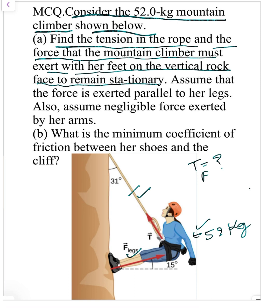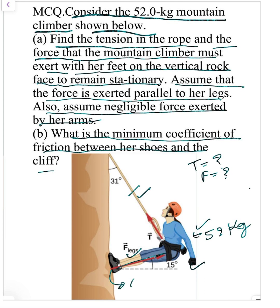The whole system remains stationary, meaning equilibrium condition. Assume that the force is exerted parallel to her legs. Also assume negligible force exerted by arms. And what is the minimum coefficient of friction between her shoes and the cliff? That is μ. So our goal is to determine capital T, F, and μ.